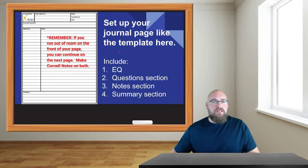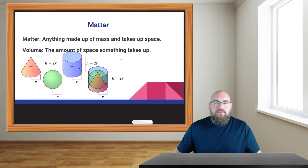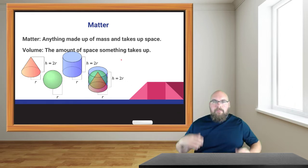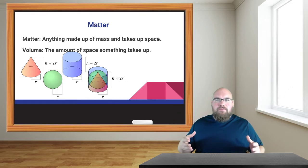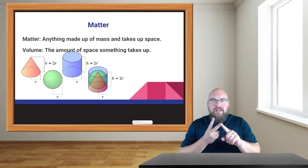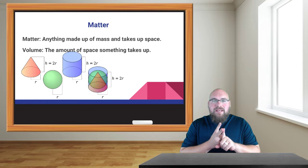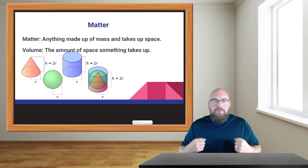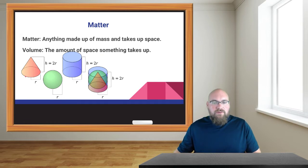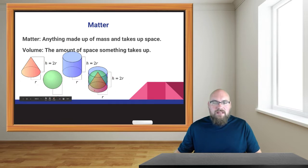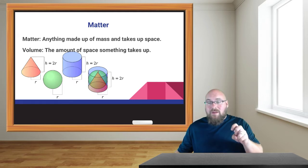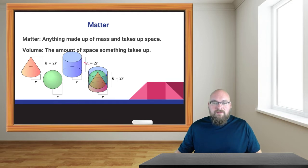First off, we need to talk about what is matter. Matter is super important because it is everything — matter is anything that has mass and takes up space. For something to take up space means that it has volume. So matter has mass and volume. If you look here we have a couple of different equations for volume, and we can see that these items all take up different amounts of space.